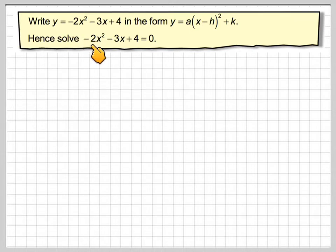So write minus 2x squared minus 3x plus 4 in the form y equals a brackets x minus h all squared plus k. And then hence solve the equation minus 2x squared minus 3x plus 4 equals 0. If it says hence you have to use the method of the first part of the question.